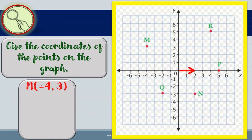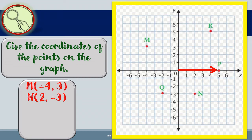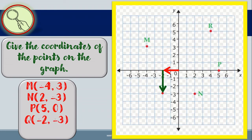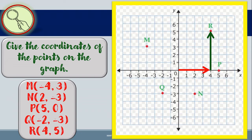Let's go to point N: 2 units to the right from the origin and 3 units down. The coordinates of point N are (2, −3). Let's go to point P: 5 units from the origin along the X-axis, which means it lies on the X-axis, and therefore P has coordinates (5, 0). Let's go to point Q: 2 units to the left of the origin and 3 units down — coordinates of point Q are (−2, −3). And lastly, point R: 4 units to the right from the origin and 5 units up — that is point R with coordinates (4, 5).